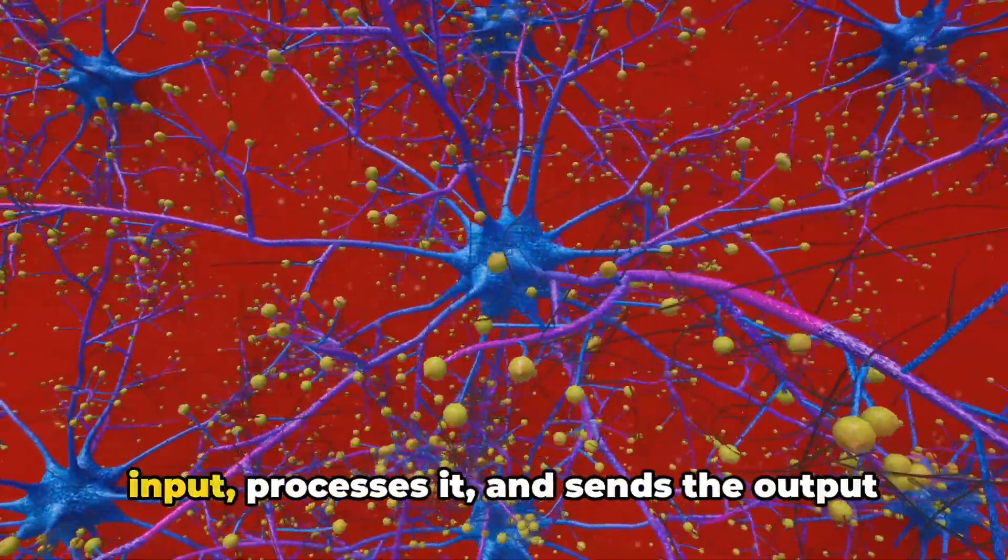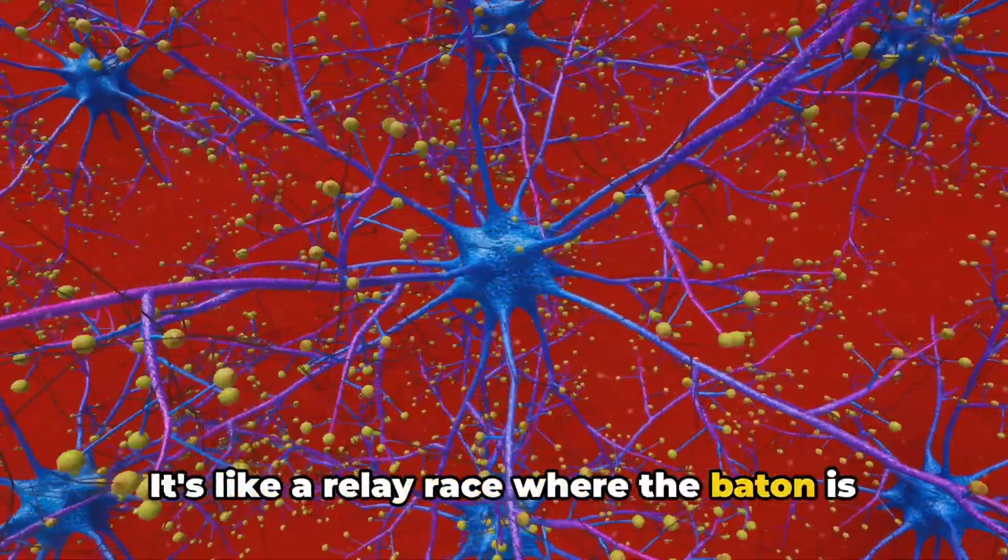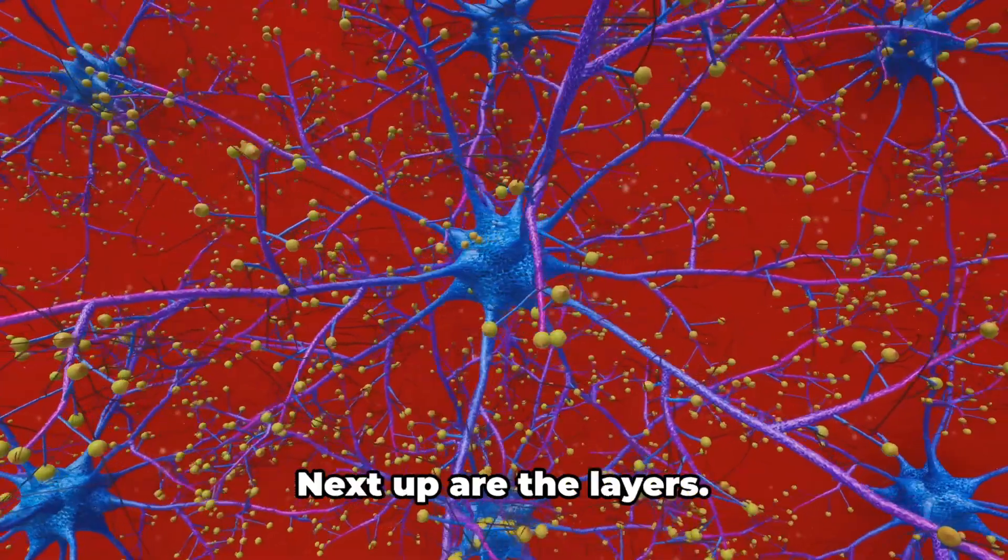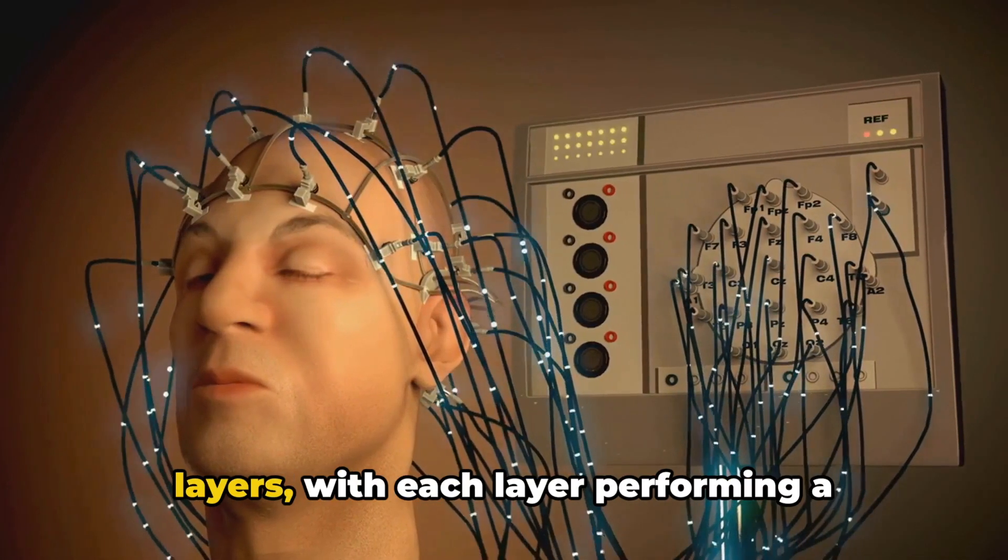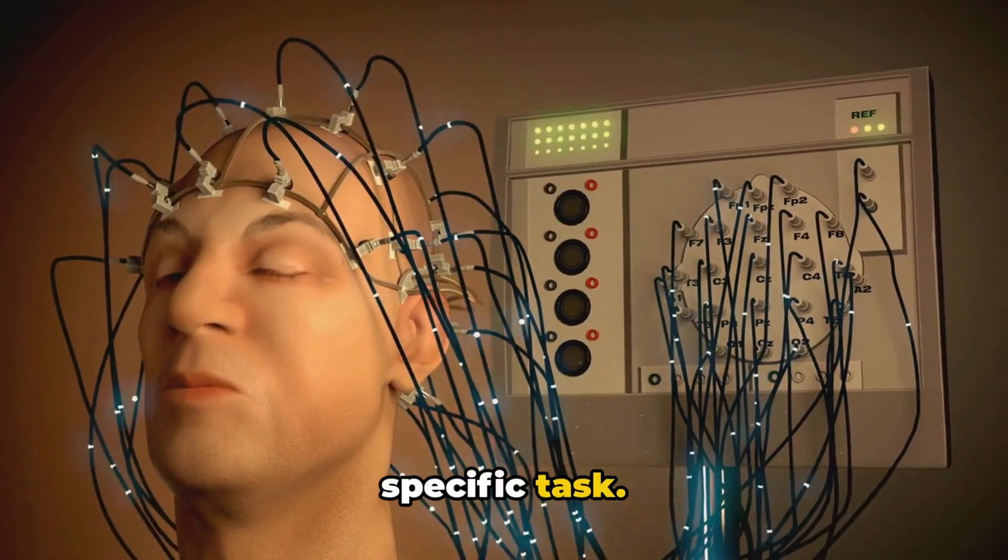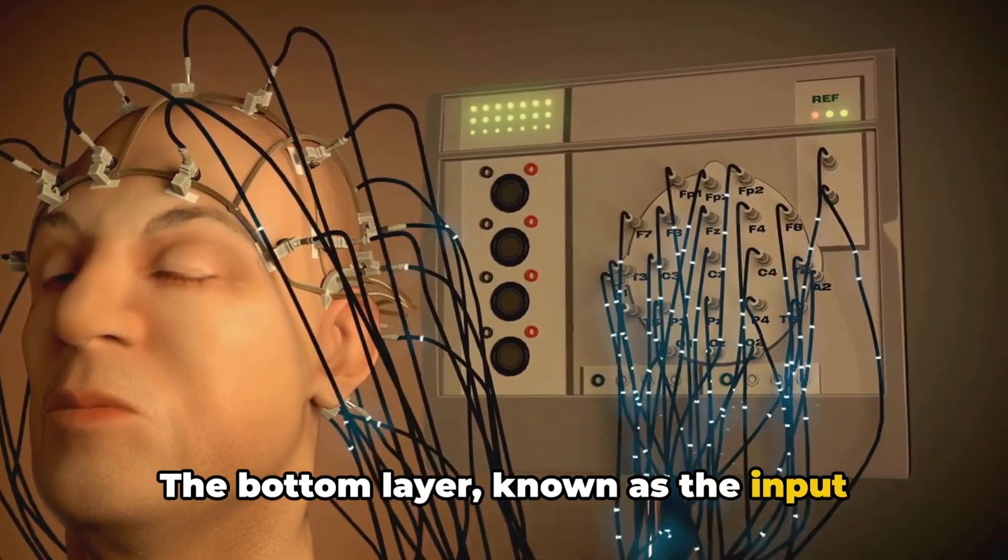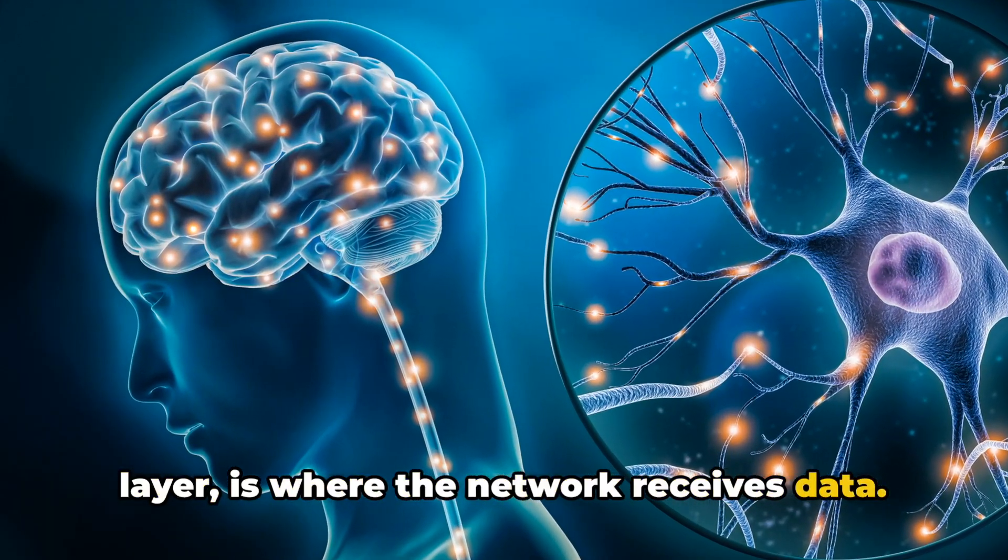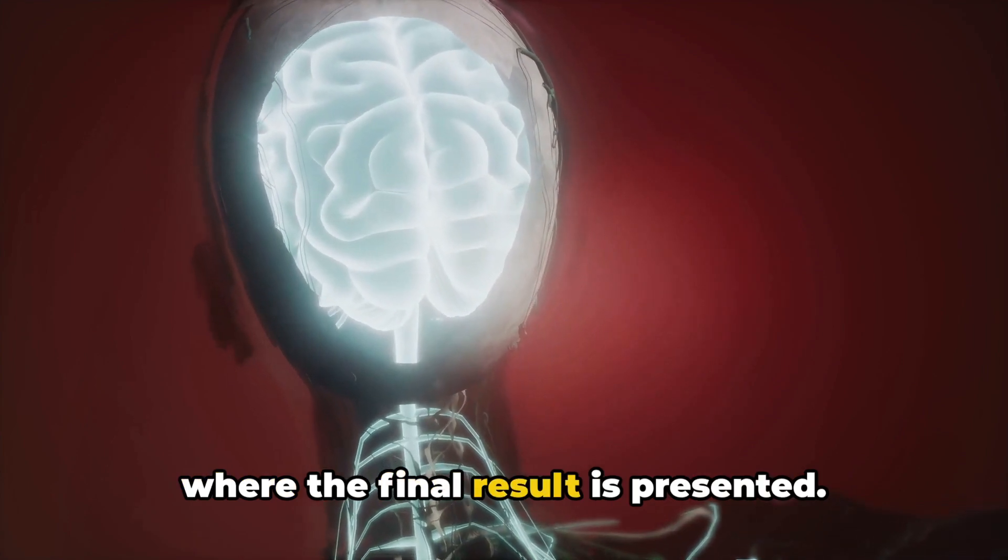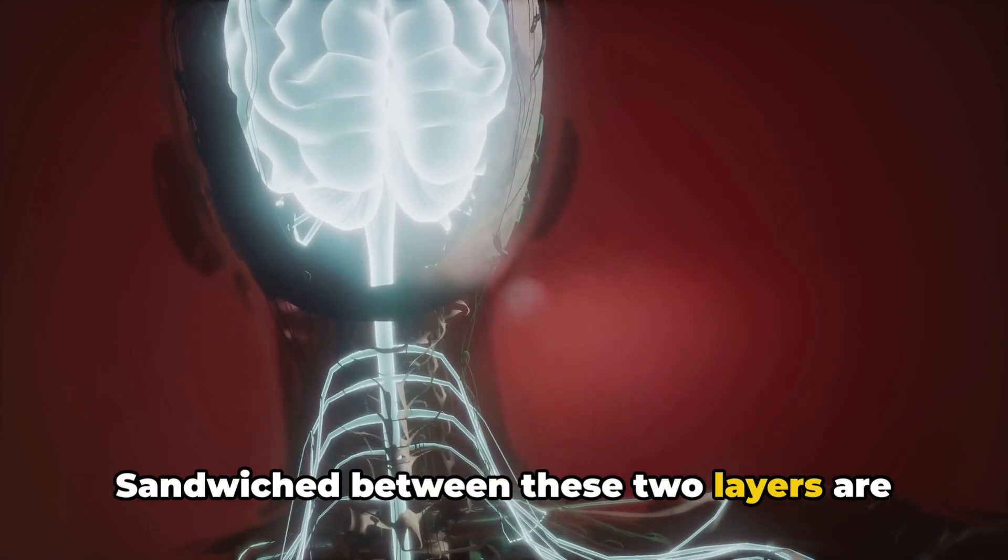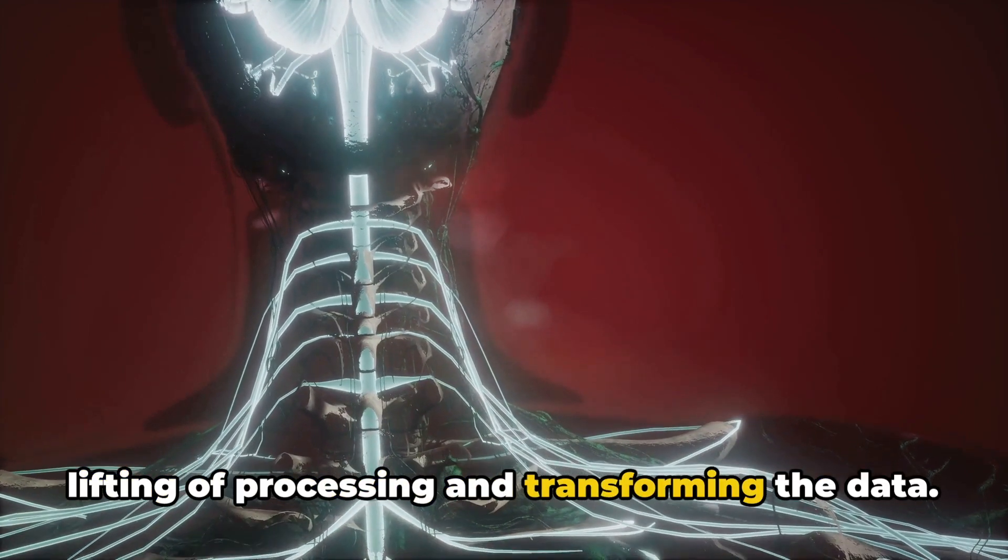Each neuron in a neural network receives input, processes it, and sends the output to other neurons. It's like a relay race where the baton is passed from one runner to another. Next up are the layers. A neural network consists of multiple layers with each layer performing a specific task. Picture it like a multi-tiered wedding cake. The bottom layer, known as the input layer, is where the network receives data. The top layer, or the output layer, is where the final result is presented. Sandwiched between these are the hidden layers, which do the heavy lifting of processing and transforming the data.